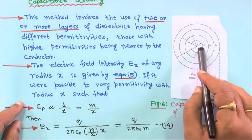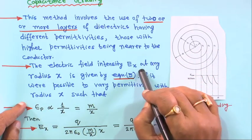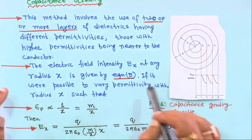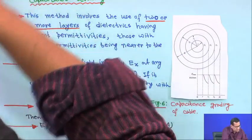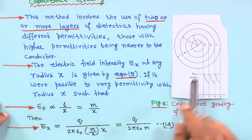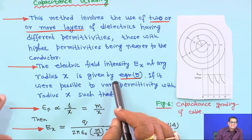With higher permittivity being nearer to the conductor, the condition is ε₁ ≥ ε₂ ≥ ε₃. The electric field intensity E_x at any distance x from the center of the conductor is given by equation 5: E_x = q / (2π·ε₀·εᵣ·x).